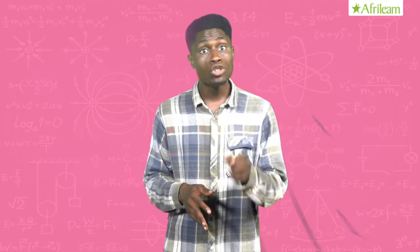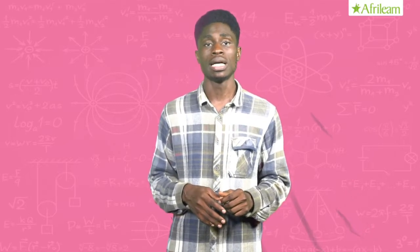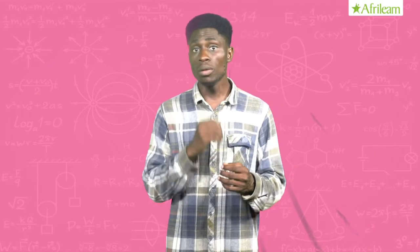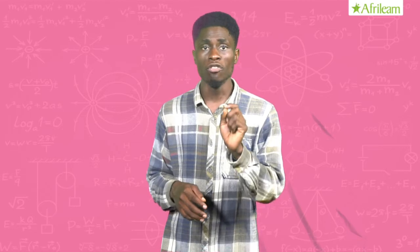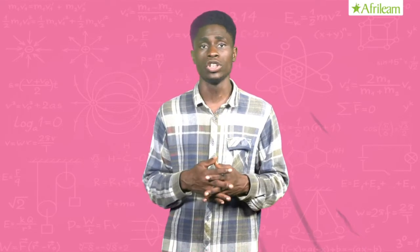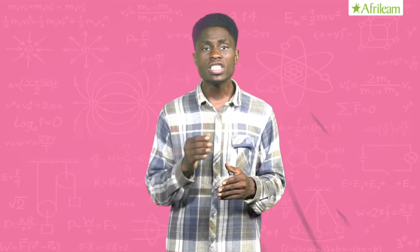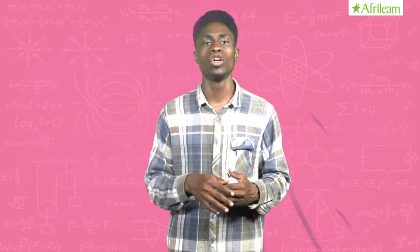Gas thermometer is used for very accurate temperature measurements and calibrating other thermometers. The thermometer scale is given by: Tv equals (2·Vt minus V0, divided by V100 minus V0), multiplied by 100. Here, Vt, V0, and V100 are the respective volumes of the gas at constant pressure.